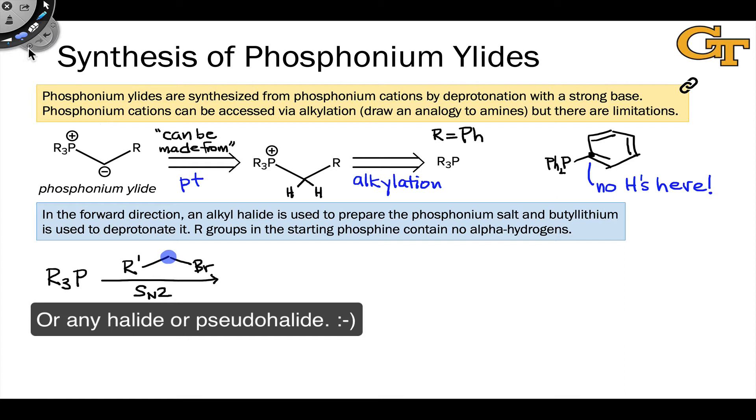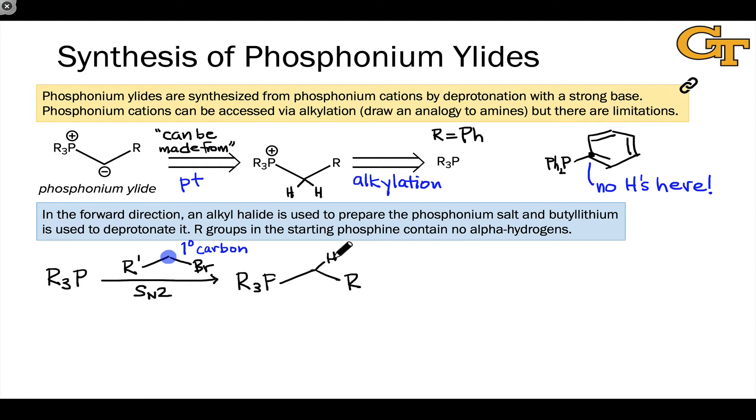The result is a phosphonium cation with a primary carbon linked to phosphorus bearing two hydrogens. And of course, the counter ion to the phosphonium cation is the conjugate base of the leaving group. Here, it's a bromide.